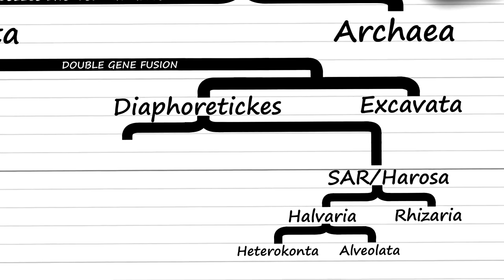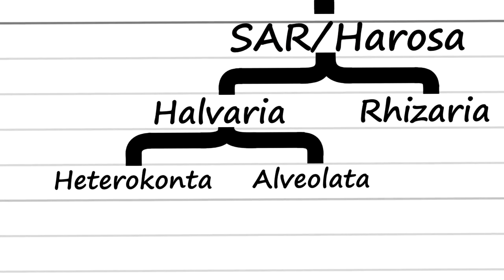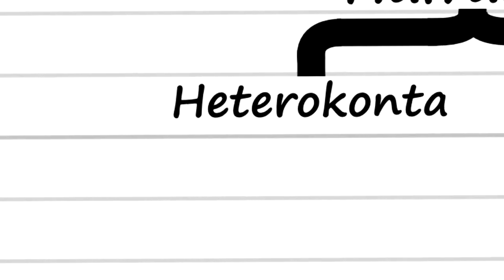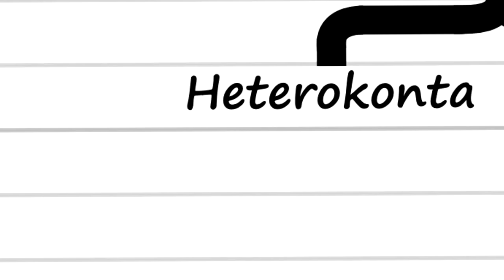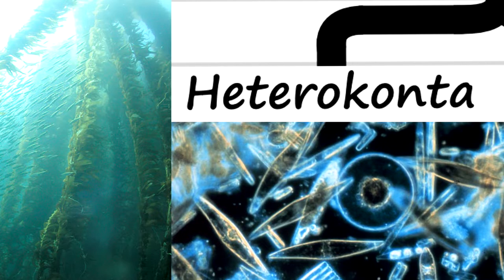The group SAR, or Harsora, is a supergroup that contains several smaller groups, one of which being Heterochons. This group contains mostly algae, ranging from the giant multicellular kelp to the unicellular diatoms.